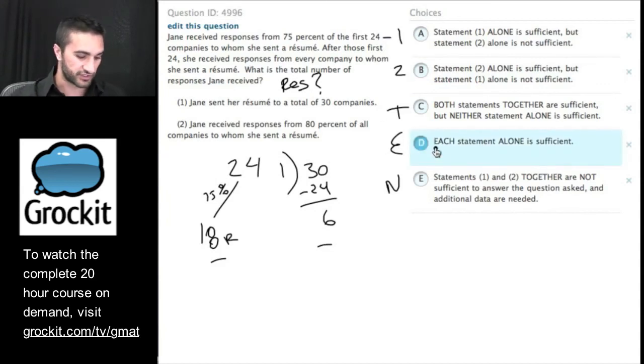The question is, is each statement alone sufficient or is it just one by itself? Let's look at statement two. Jane received responses from 80% of all companies to whom she sent a resume. So, 80% of all companies to whom she sent a resume. Go ahead and work that one and tell me in the chat box whether statement two is sufficient to answer the question, to tell us whether or not we know how many responses Jane received.